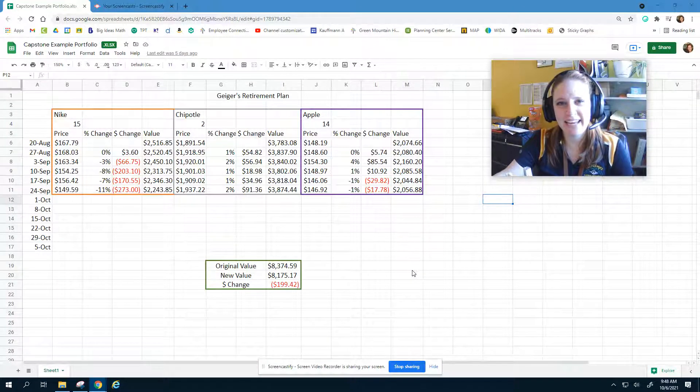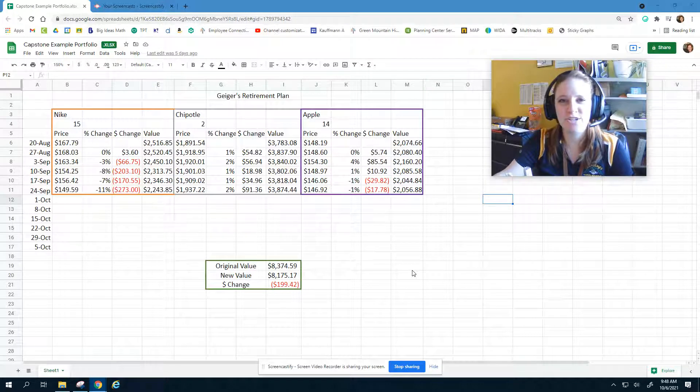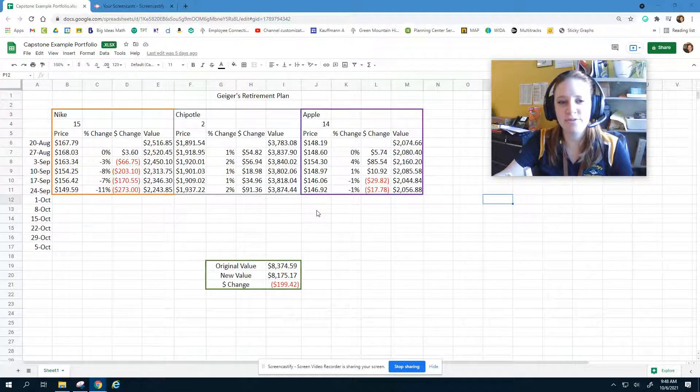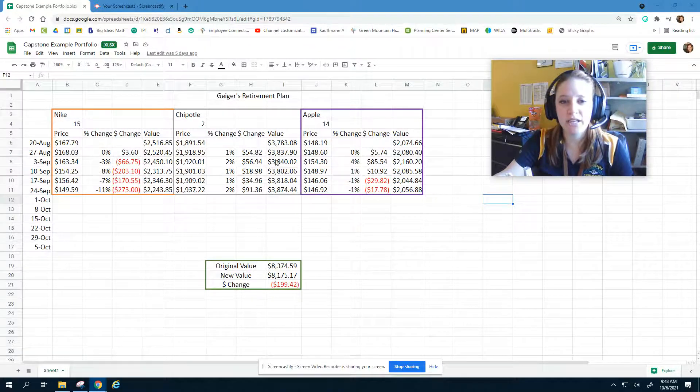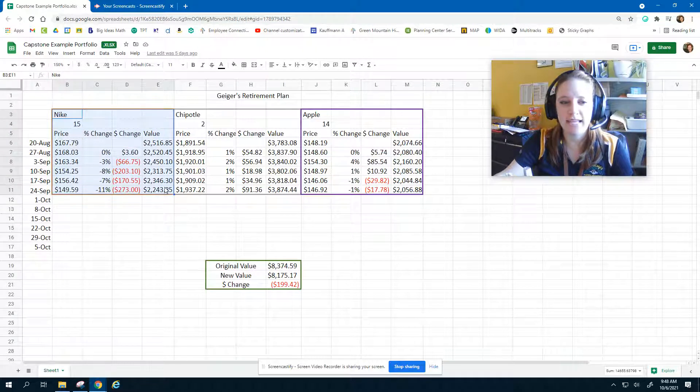Hello, my name is Ms. Kaufman, and I'm here today to teach you about how to make a linear equation from your stock prices. Take a look at the example we have here. We've got Geiger's retirement plan, and you all are using three different stocks. The first thing you need to do is choose which stock you'd like to examine.